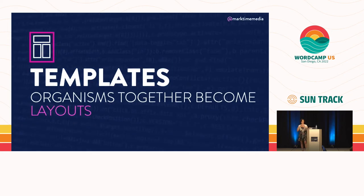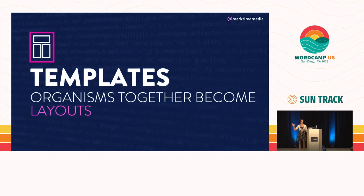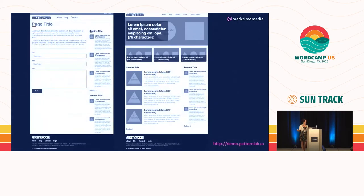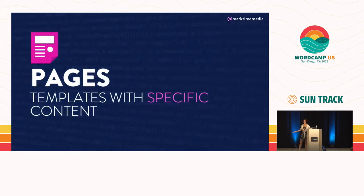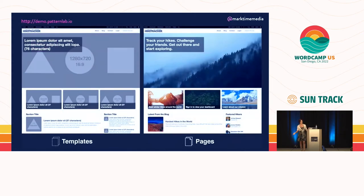That's when we also start getting into templates. If we're combining block-level organisms together in different ways, we're starting to build templates — repeatable combinations of organisms that are often entire layouts or entire content stories. You might recognize elements combining headers, content, sidebars, and footers into templates. And then we have pages, where you take a template and put real content into it. You could have the same template with multiple pages — here is a template, here is some content.